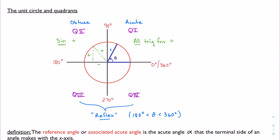In quadrant 3, I have a negative x value and a negative y value, and it turns out that my tangent is positive in quadrant 3. And following that logic, in quadrant 4, I have a positive x-axis and a negative y-axis, so the only positive function there is cosine. Only cosine is positive.